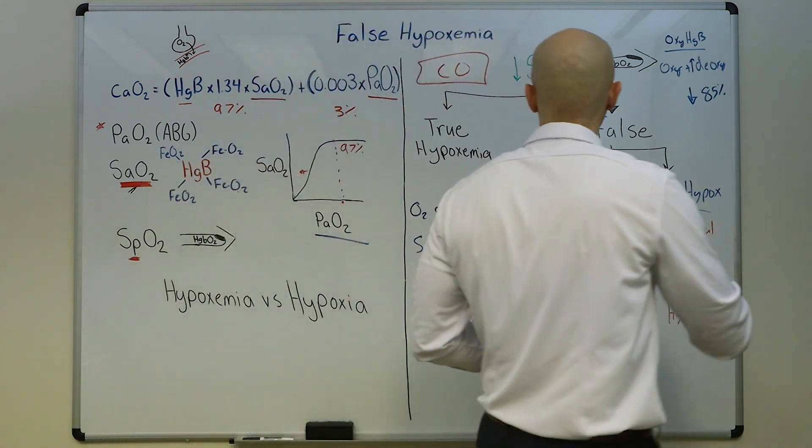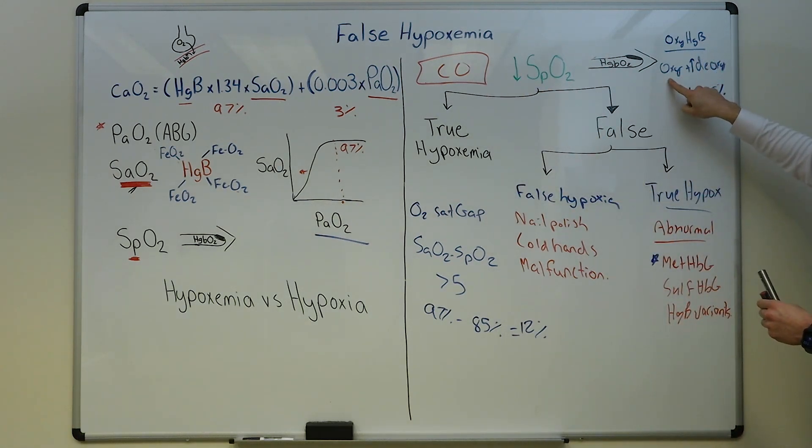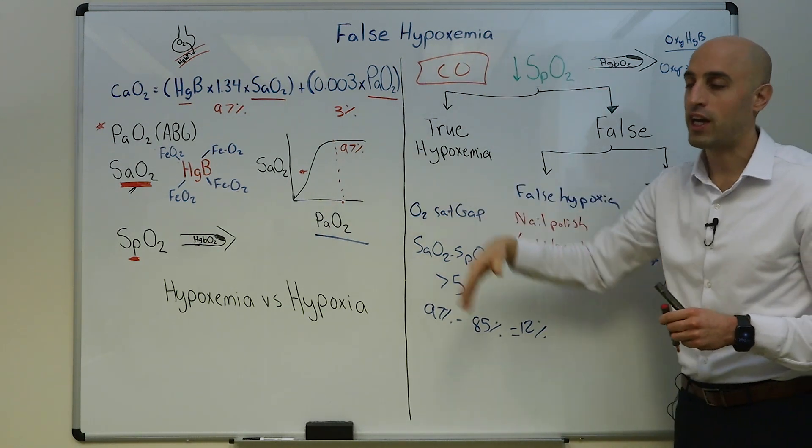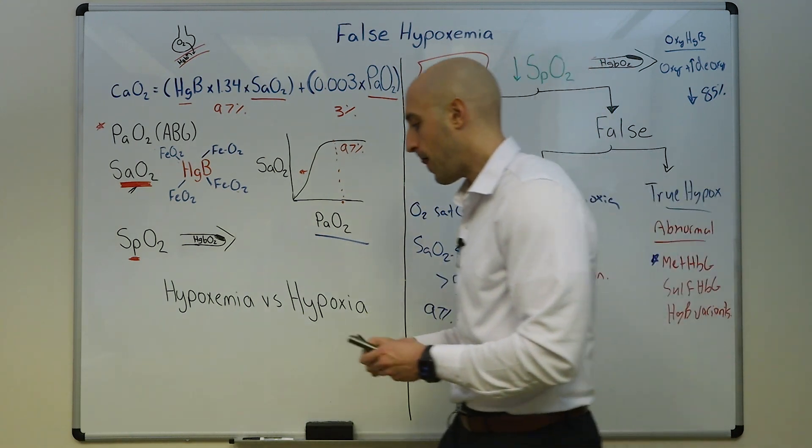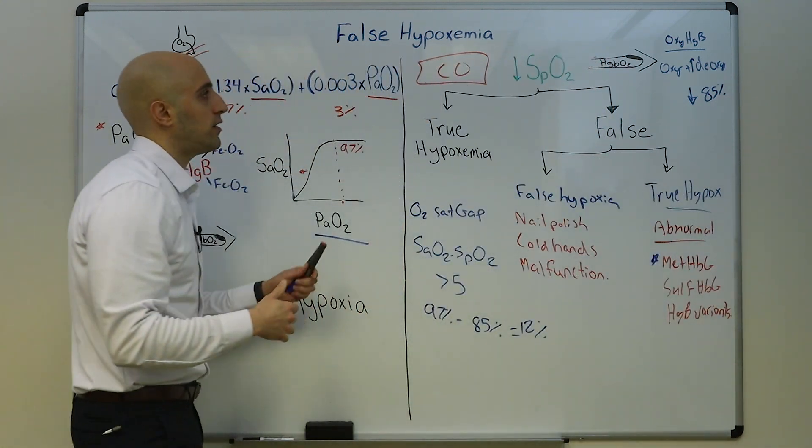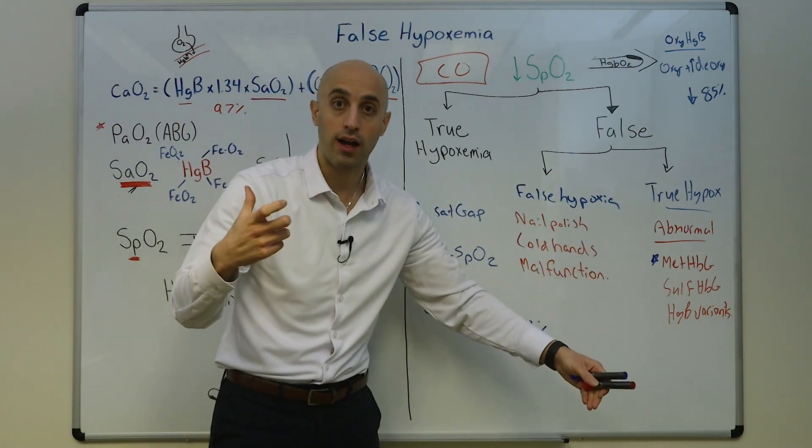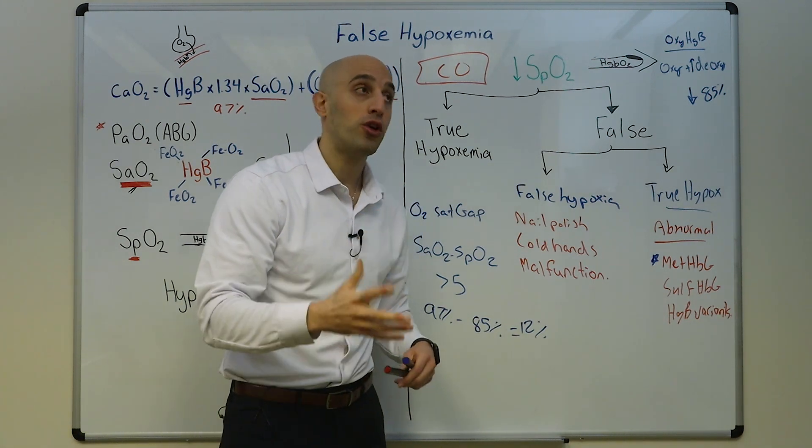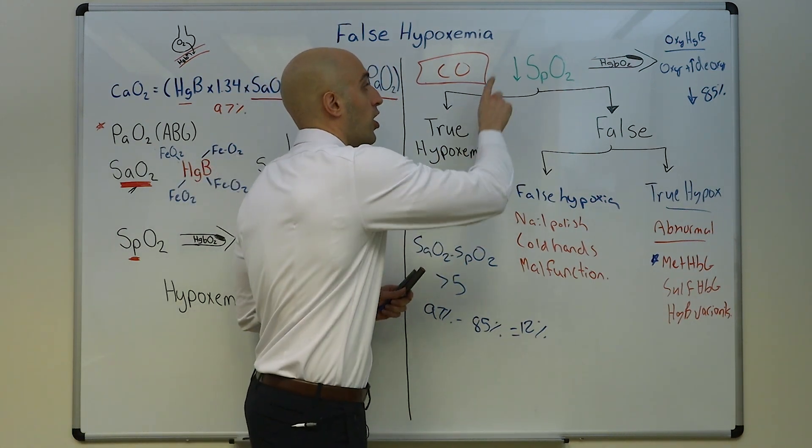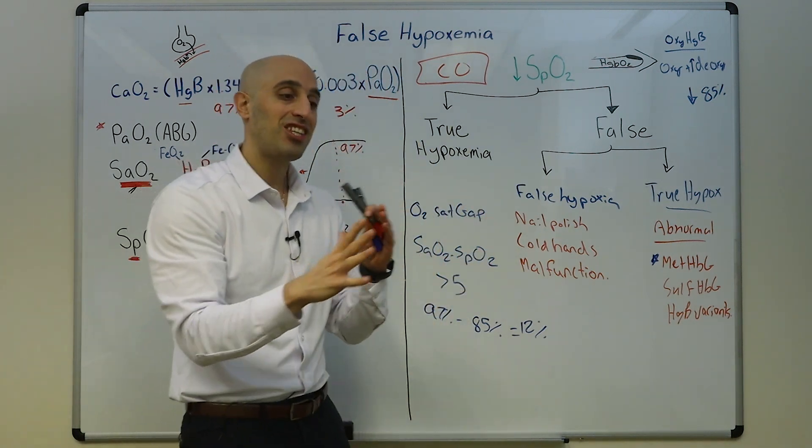You may ask, Reza, where is carbon monoxide on all of this? Carbon monoxide, folks, is something critical to consider in the right patient who has exposure, and carbon monoxide absorbs light like oxyhemoglobin, so the SpO2 will be normal in carbon monoxide despite having cellular hypoxia. And the way to determine carboxyhemoglobin and even methemoglobinemia objectively is to send the co-oxymetry with arterial blood gas.